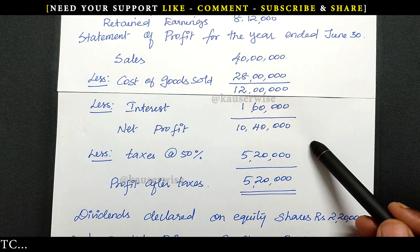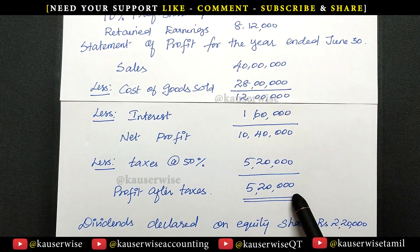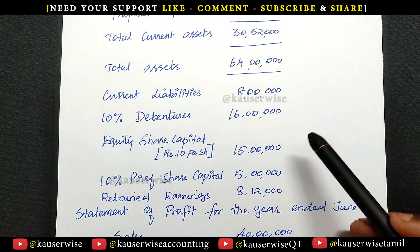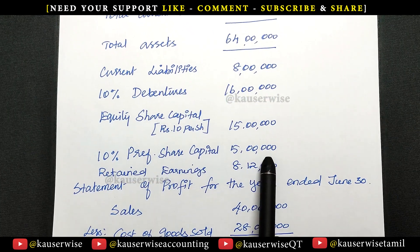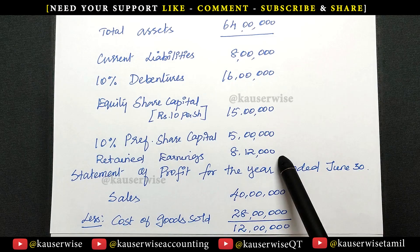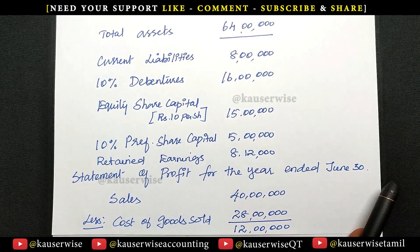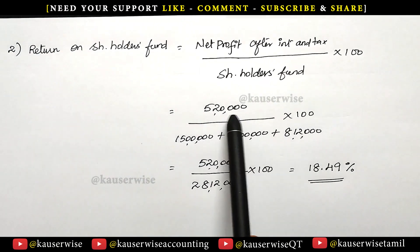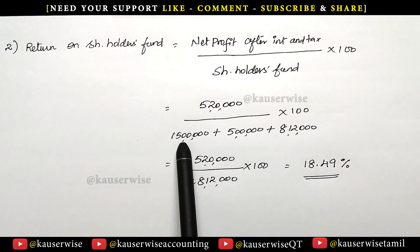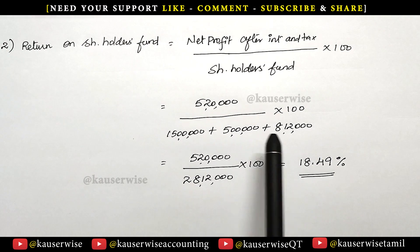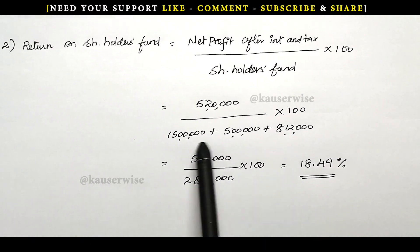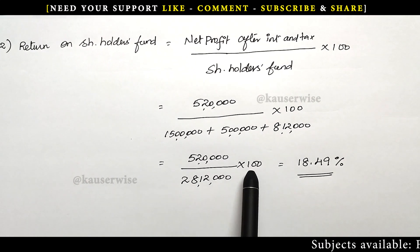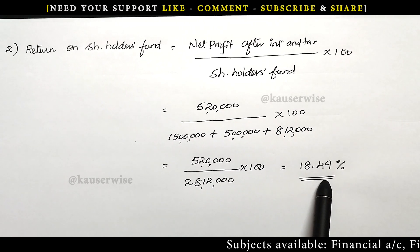See the calculation. In the income statement, we have profit after interest and tax — that is 5,20,000. Shareholders fund consists of equity share capital, preference share capital, plus retained earnings, giving total shareholders fund. Return on shareholders fund: net profit after interest and tax 5,20,000 divided by equity share capital plus preference share capital plus retained earnings equals 28,12,000 into 100. Answer: 18.49%.